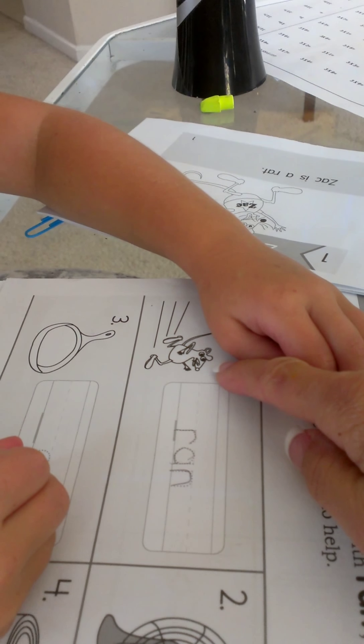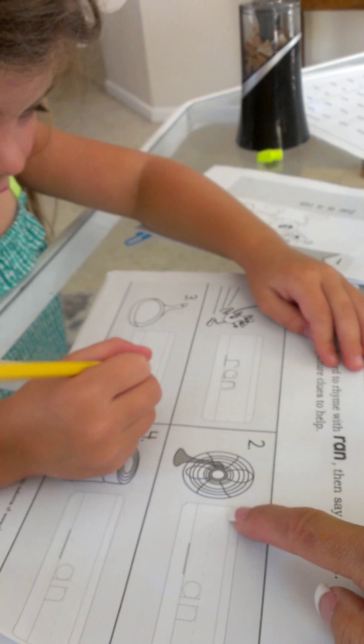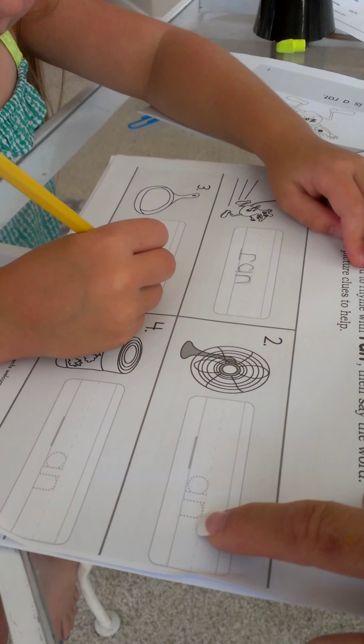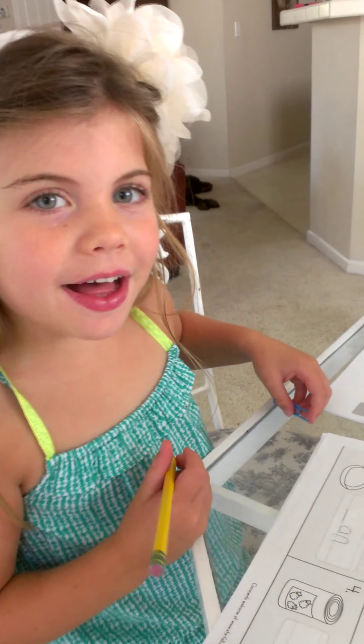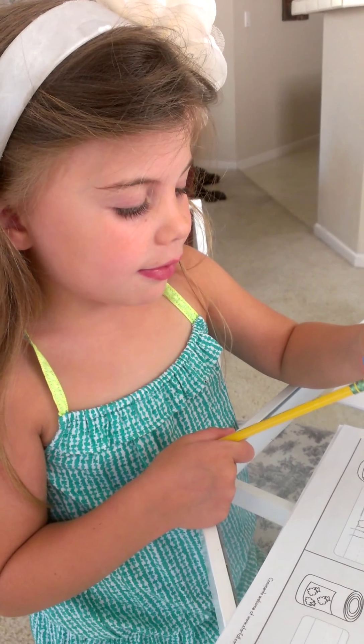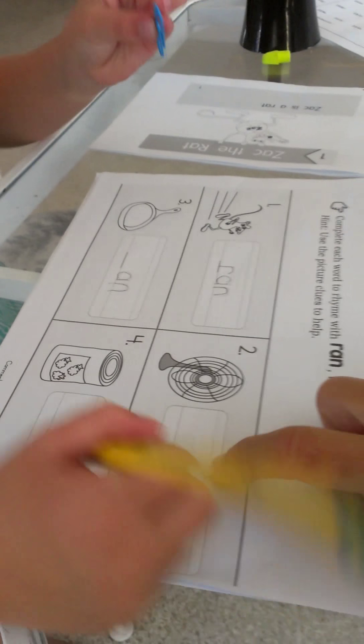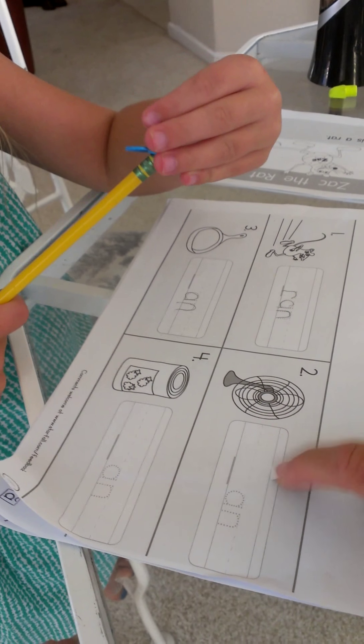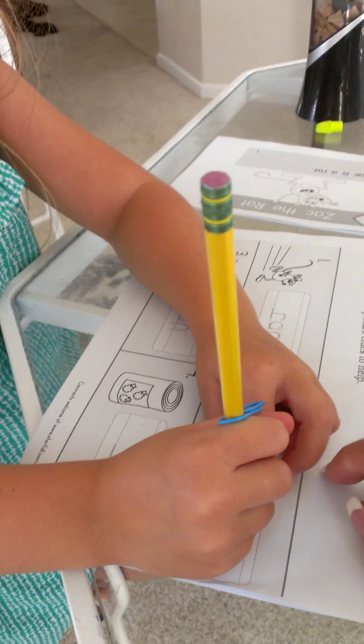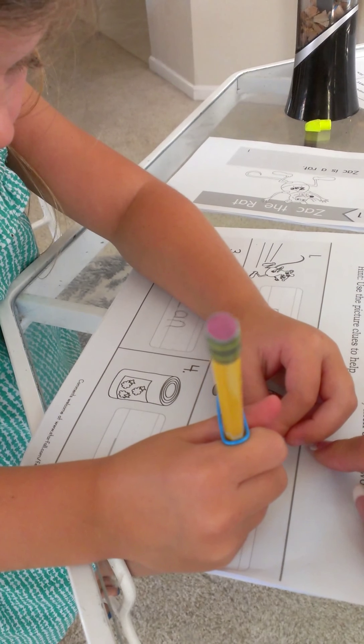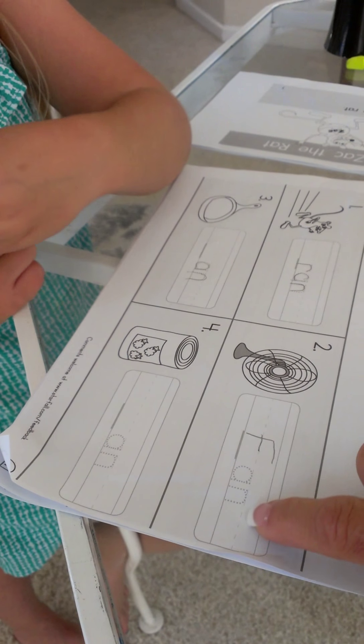The first thing she's doing is she's seeing a picture of Zack and he ran. Peyton, what is this a picture of? Fan. So as you can see the 'an' is there, so what's the beginning sound of fan? F. Can you write an F for there on that paper for me? Okay, show me an F. Good girl. Can you read the word for me now? Fan. Good girl.